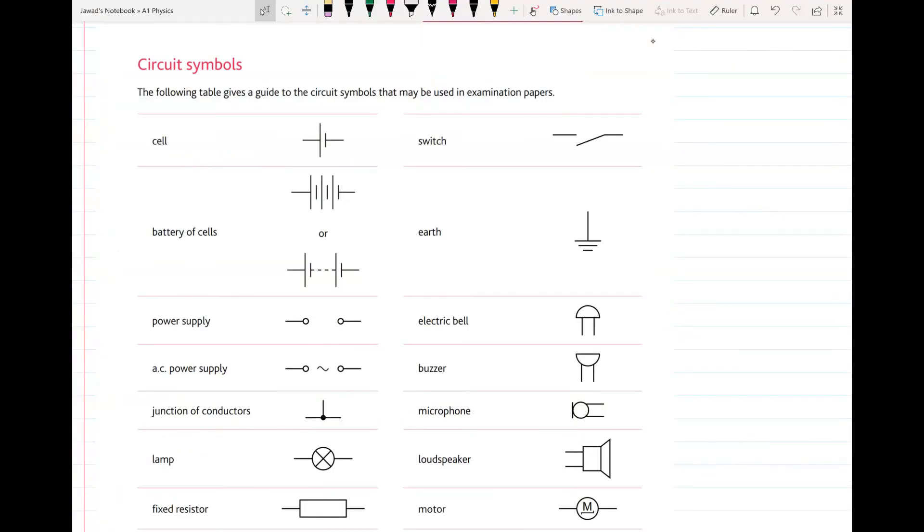Okay, we will start with circuit symbols. The following table gives a guide to the circuit symbols that may be used in examination papers. I just have to say that you can memorize these. So first symbol is the symbol of a cell.